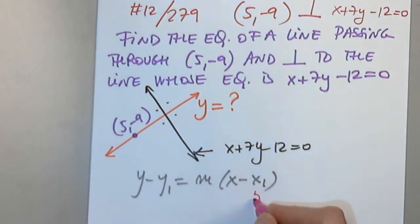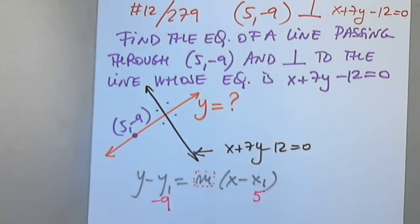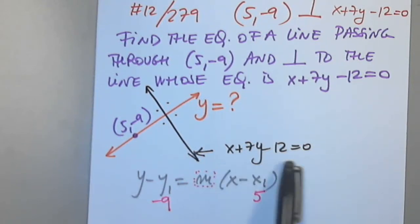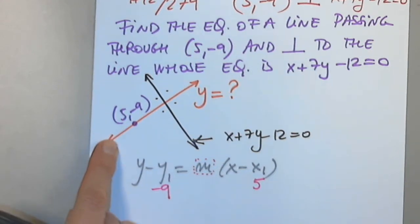I do have 5 comma negative 9, but I'm missing the slope — a very important piece of information. I know something about the slopes of two perpendicular lines: if one slope is 15, the other must be negative 1 over 15 so that their product is negative 1. If one slope is 2 thirds, the other is negative 3 over 2. So find the slope of the given line — if you have that, you can determine the slope of the line we want.